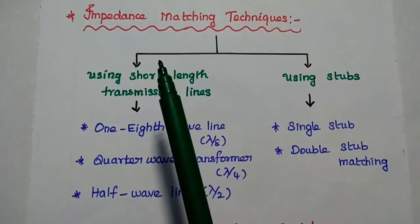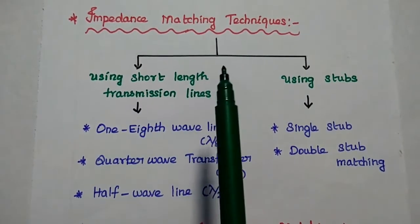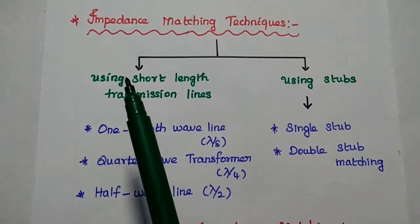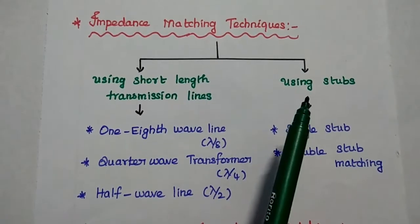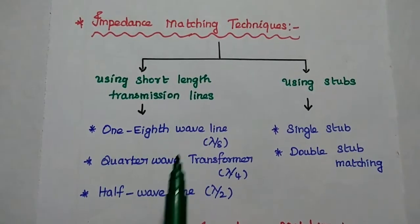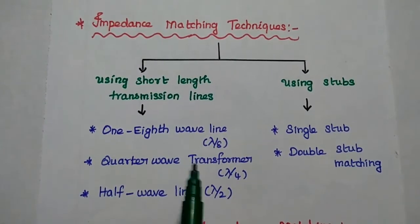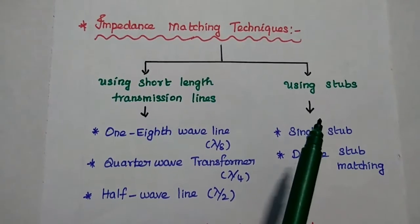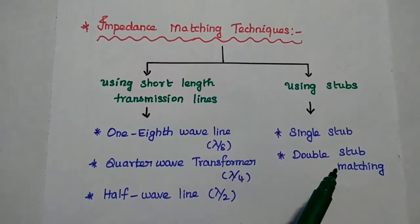Next, impedance matching techniques. There are different techniques used to match the load impedance with the source impedance. It can be done either using short length transmission lines or using stubs. For short length transmission lines, there are three types: the one-eighth wave line method, the quarter wave transformer method, and the half wave line method. Using stubs, we have two types: single stub matching and double stub matching.